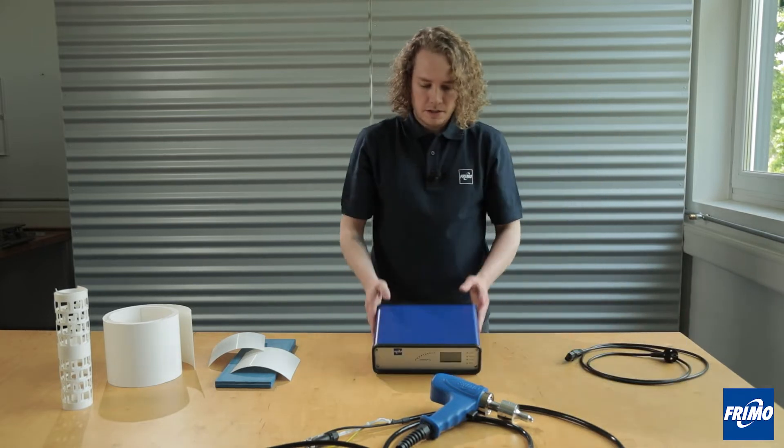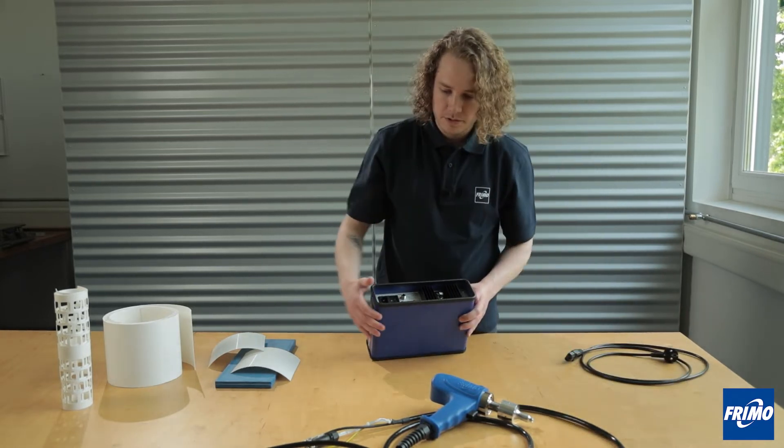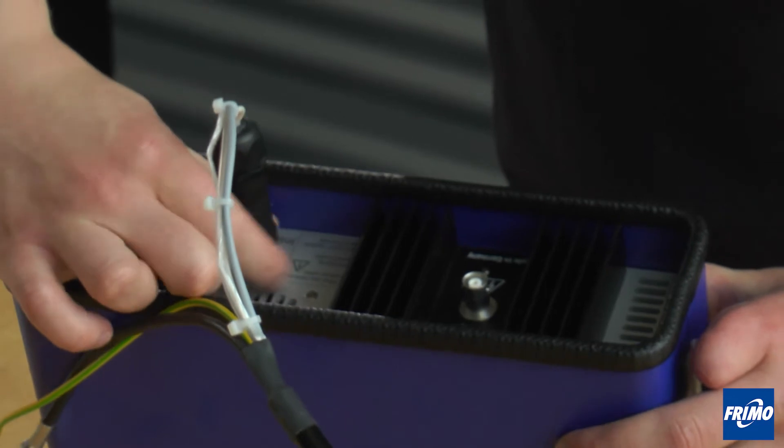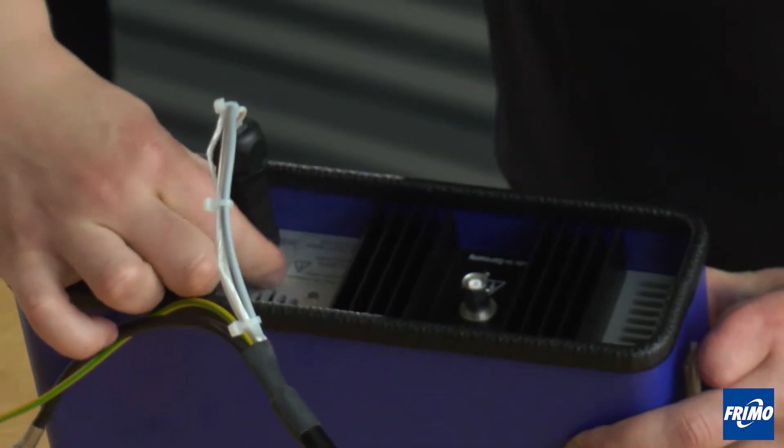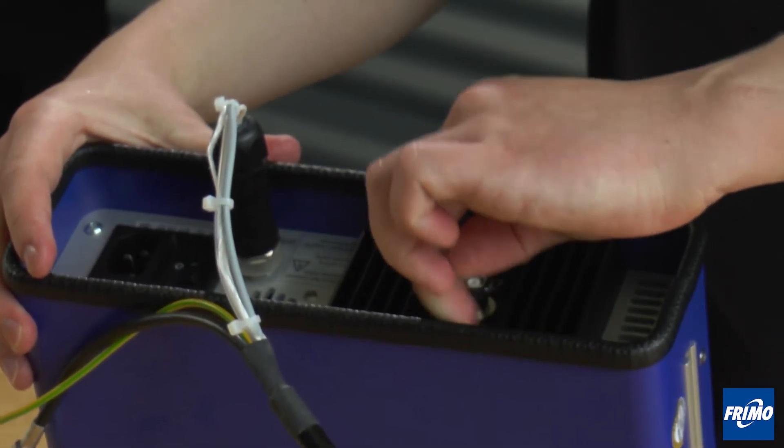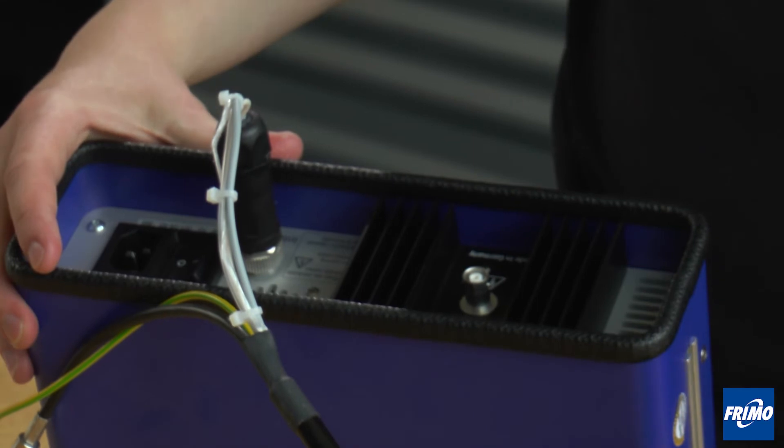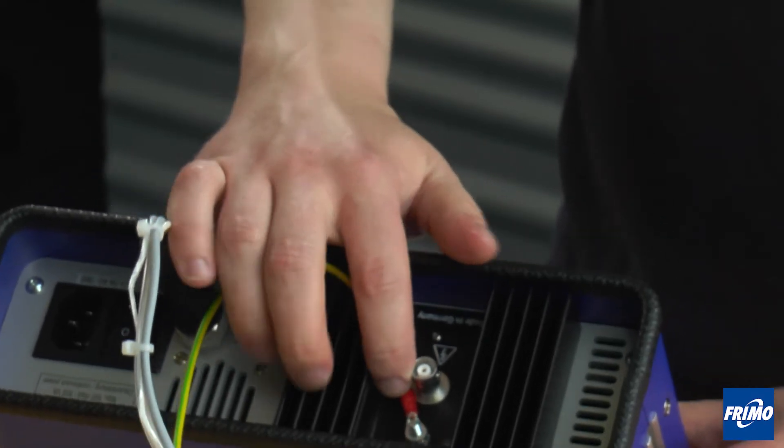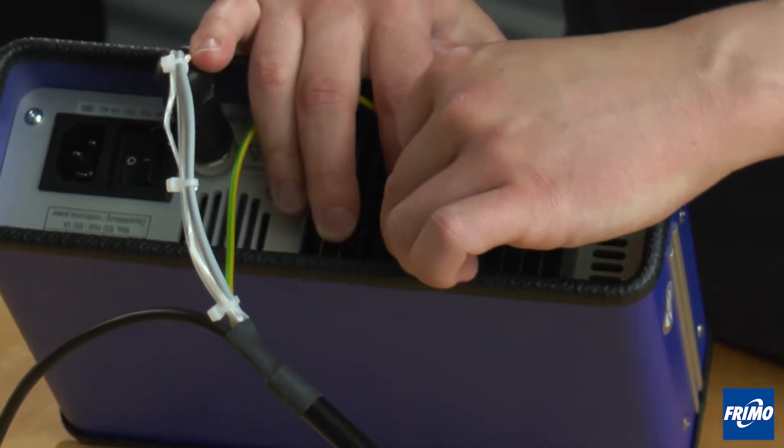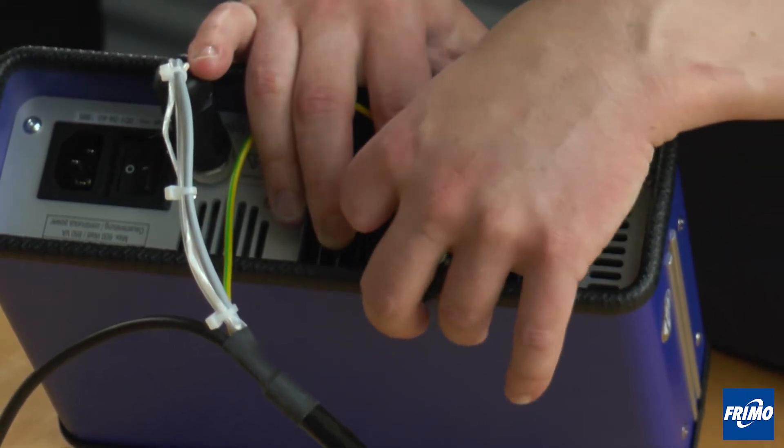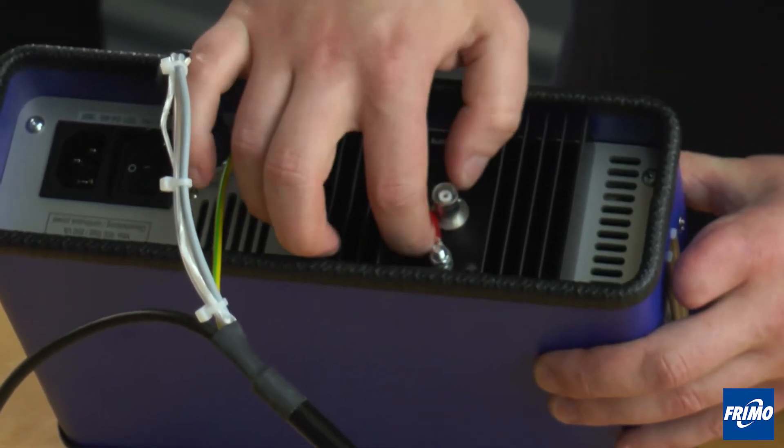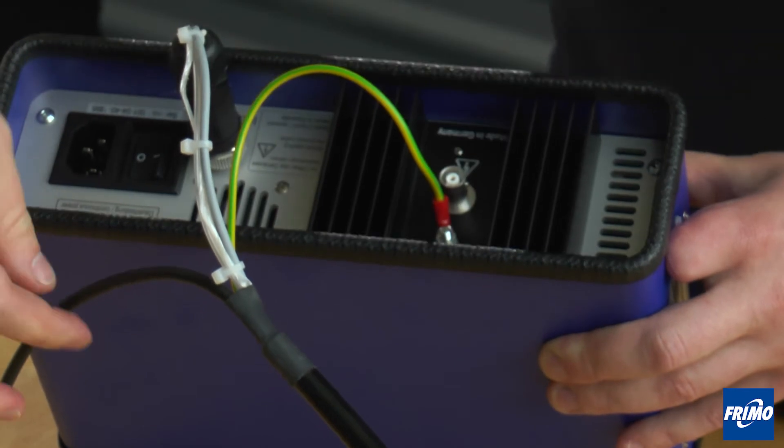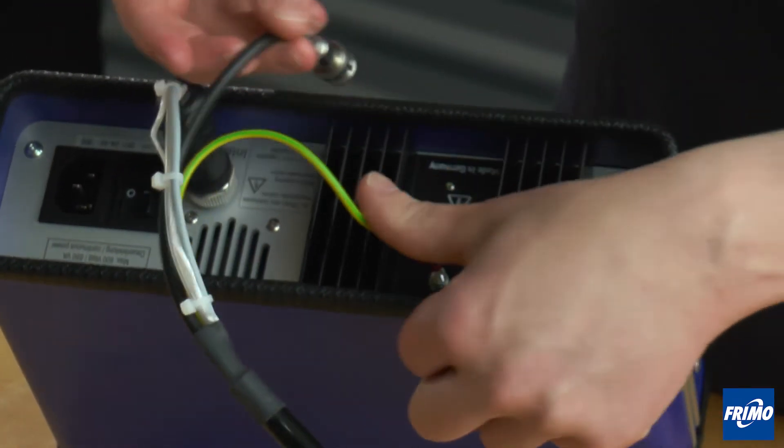First you connect the hand welding unit to the ultrasonic generator. You take the system cable, then you connect the ground cable, and in the end you connect the ultrasonic high frequency cable.